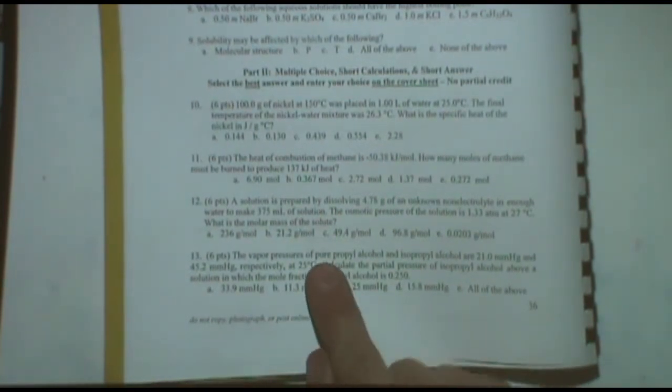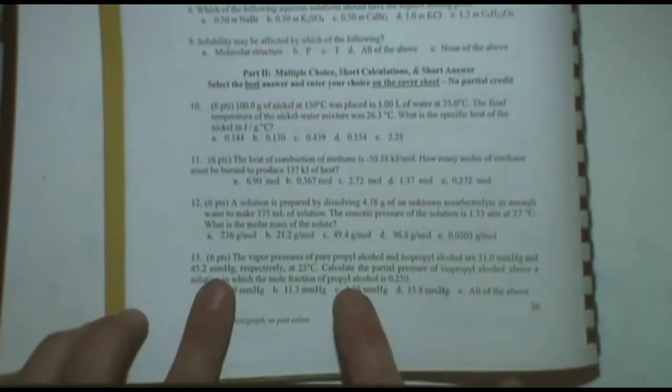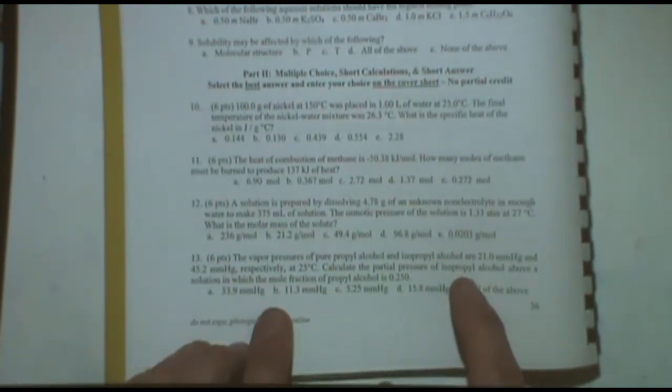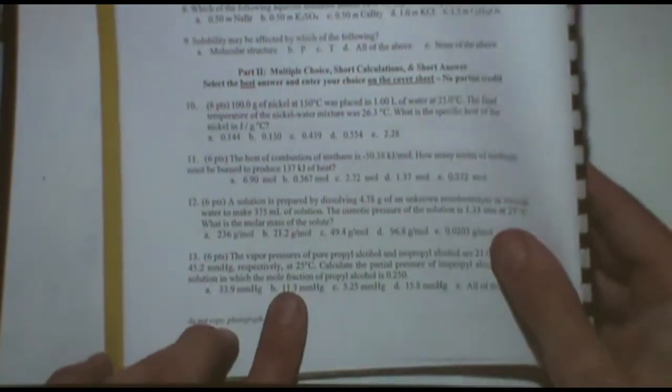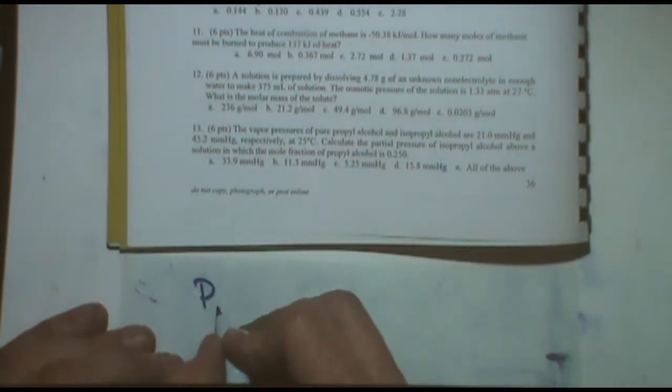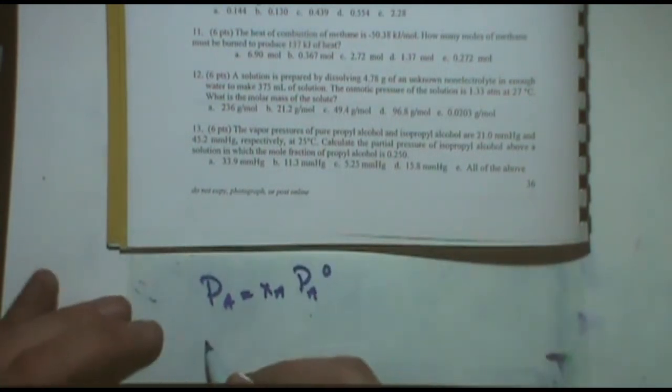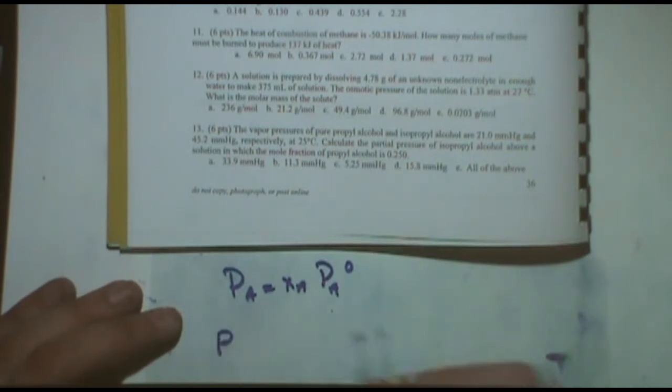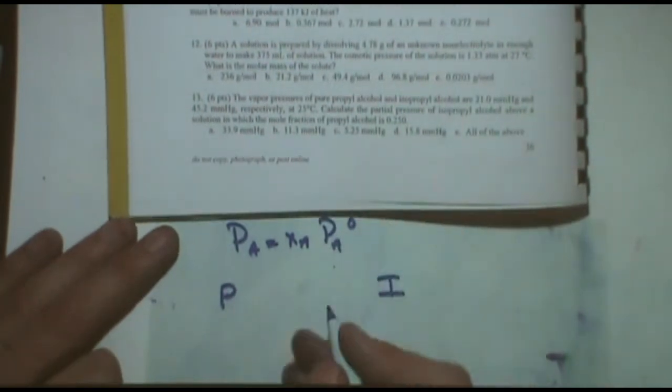You see the word pure, this is probably a Raoult's law problem. You can also tell by those two things together. Two pure pressures, kind of like the partial pressure, and they give you the mole fraction. So you want me to set this up? Let's remember the formula. PA is the mole fraction of A times the pure pressure of A. We've got two compounds, we'll say propyl alcohol and isopropyl alcohol.